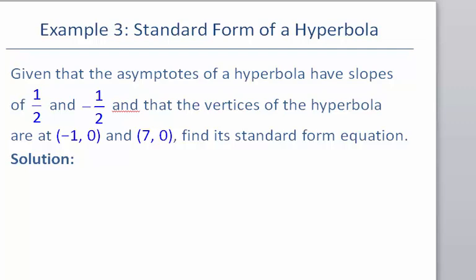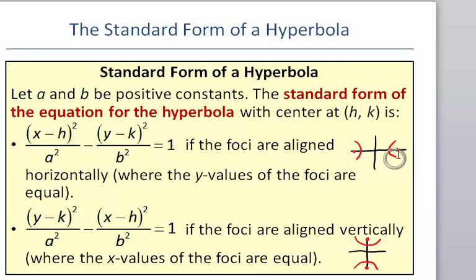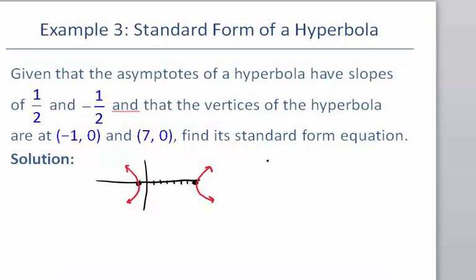To begin, I'm going to plot the two vertex points for the hyperbola. We have one vertex at 7, 0 and one vertex at negative 1, 0. In plotting these two vertex points, I now know that the parabolas have to open one to the right and one to the left, which allows me to write down a general format for the equation. Remember that if parabolas open to the left and to the right, the x comes first in the equation. So my equation is going to look like: x minus h squared over a squared, minus y minus k squared over b squared, equals 1.